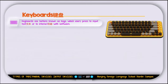The first type of input peripheral is the keyboard. Keyboards use buttons known as keys, which the user presses to input text or interact with software. You can press keys to input text, or use combinations of keys to send shortcuts and commands to different software installed on your laptop.